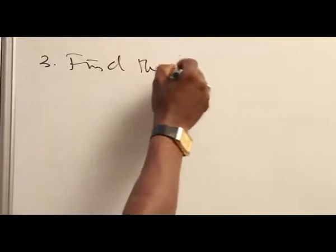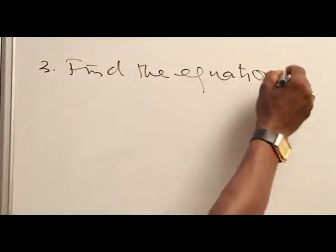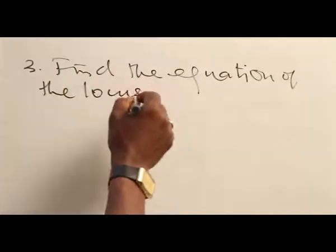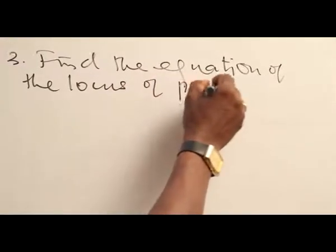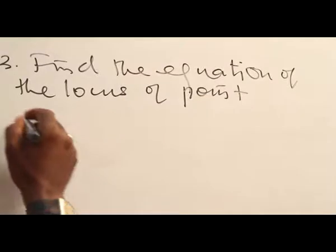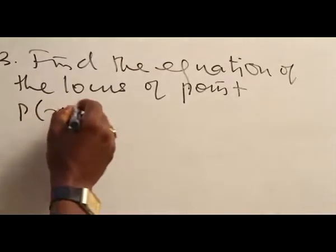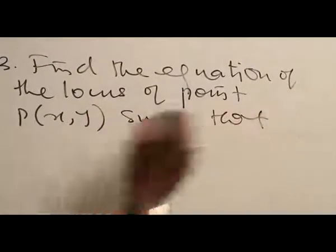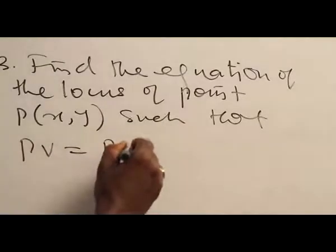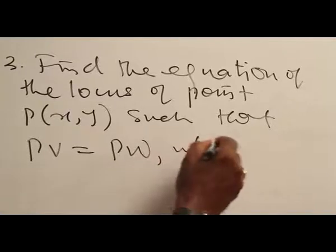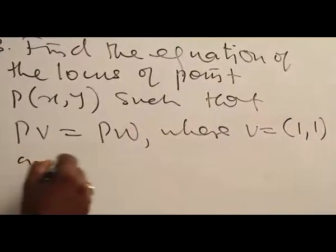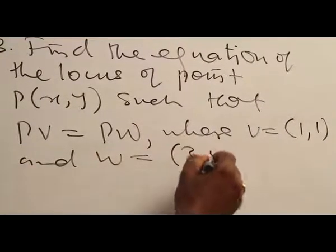Question 3: Find the equation of the locus of point P, S-1, so that PB is equal to PW, where B is equal to (1,1) and W is equal to (3,5).